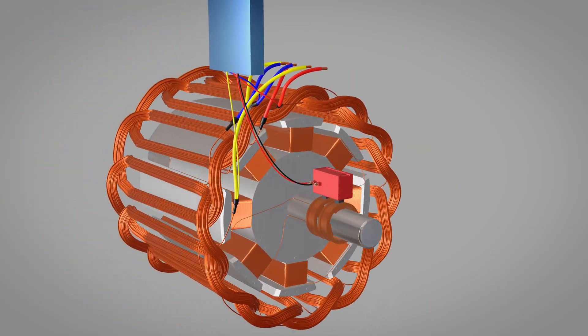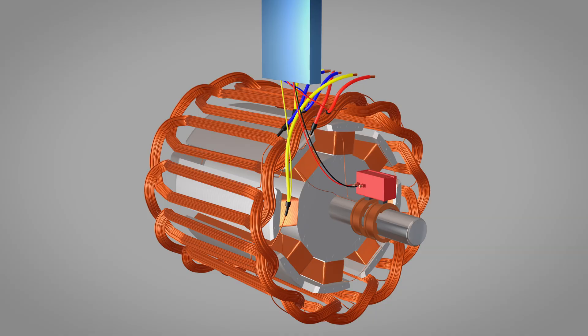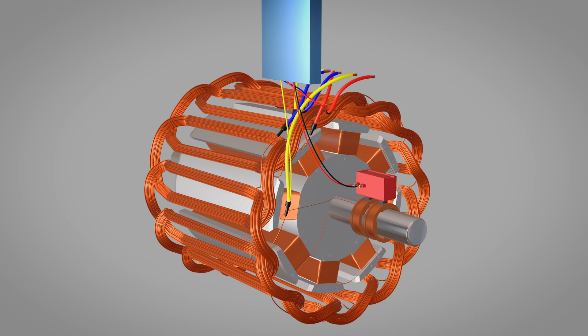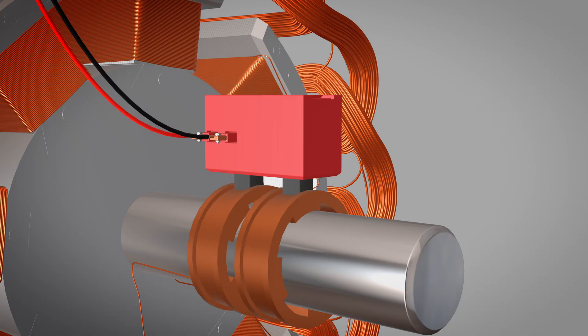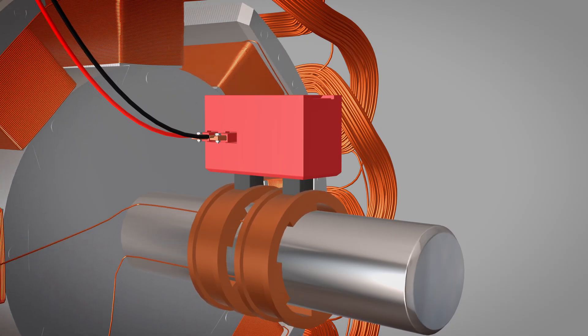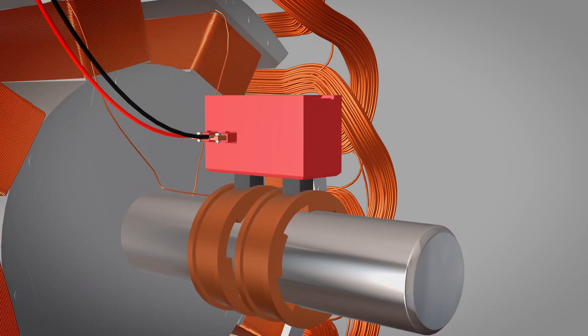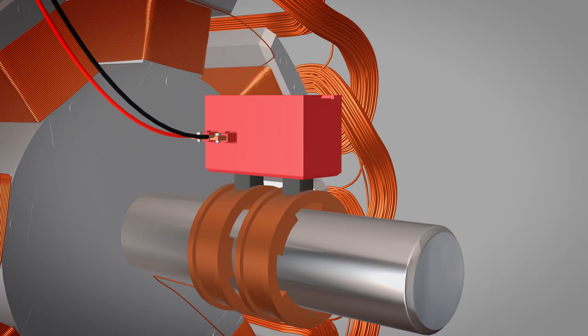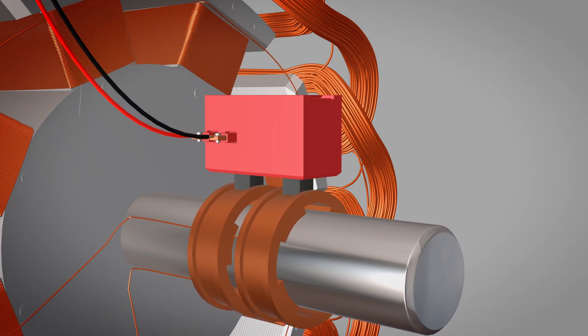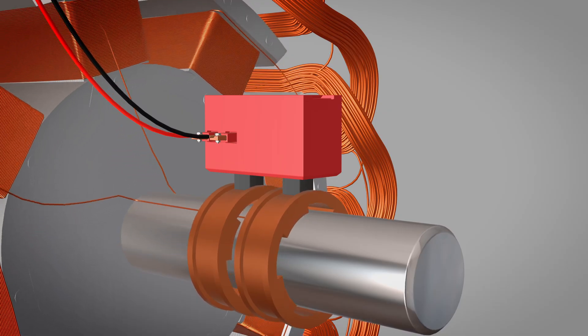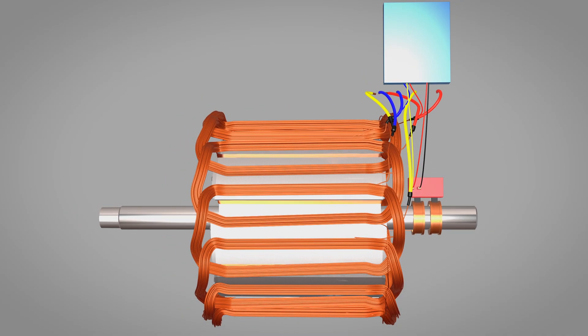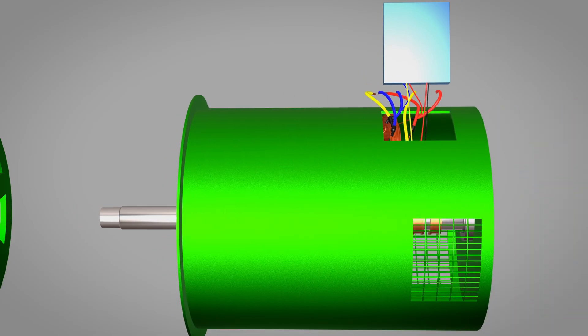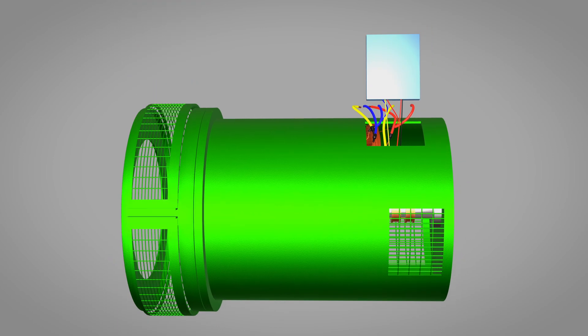While brushed DC excitation systems have served us for decades, they come with significant drawbacks that impact both reliability and operational costs. The fundamental issue lies in the mechanical contact between carbon brushes and slip rings. As these components slide against each other during operation, they create inevitable wear that demands constant attention. This wear process generates carbon dust that contaminates the electrical environment, degrading insulation and requiring frequent cleaning to maintain safe operation. This is precisely why modern alternators have overwhelmingly adopted brushless shunt excitation systems, by eliminating brushes and slip rings entirely.